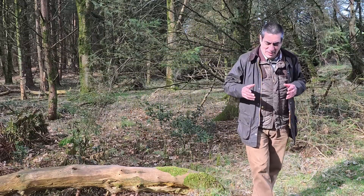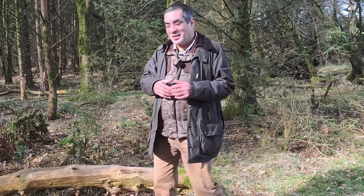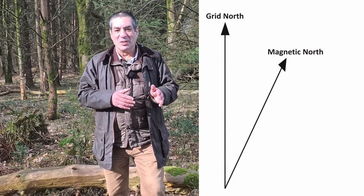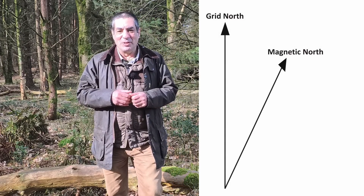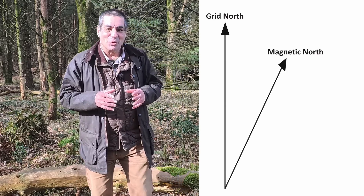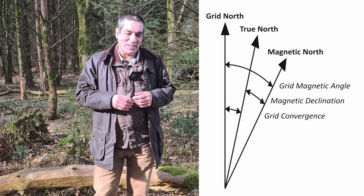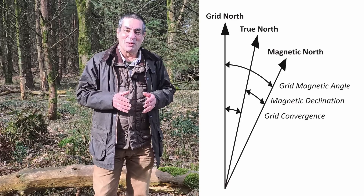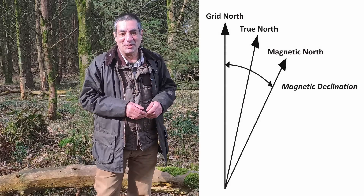Let's talk about how to find the current declination in your area. Your compass needle points in one direction and the vertical lines on your map point in another direction. Technically this is called the grid magnetic angle, but for this video, to keep things as simple as possible, we'll call it the magnetic declination.